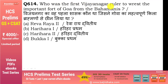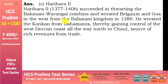Who was the first Vijayanagar ruler to wrest the important fort of Goa from the Bahmanis? Vijayanagar का पहला शासक जिसने Goa का महत्वपूर्ण किला Bahmanis से छीना, वो था Harihara II (option C)। इन्होंने Bahmani और Warangal की combined forces को रोकने में सफलता पाई। Goa का Konkan coast Bahmanis से छीना और यह एक important commercial port था जिससे rich revenue और trade मिला।